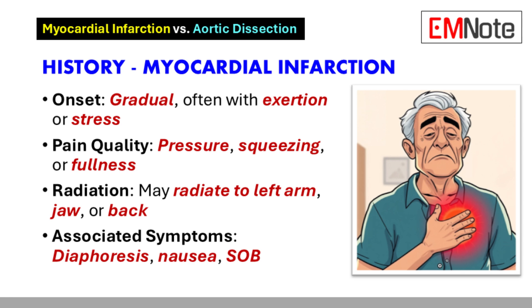Historical Features: The onset of chest pain in myocardial infarction is often gradual and may be linked to physical exertion or emotional stress. Patients typically describe the pain as pressure, squeezing, or fullness. The pain may radiate to the left arm, jaw, or back. Associated symptoms include sweating, nausea, and shortness of breath. These features are important for identifying potential cases of myocardial infarction.